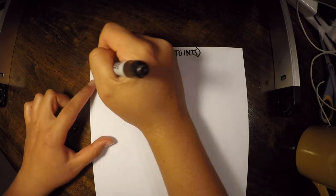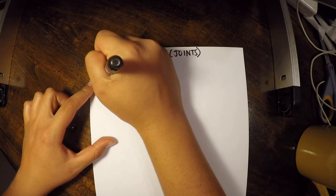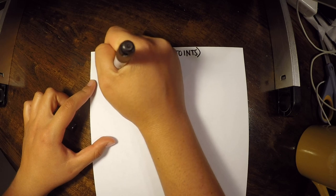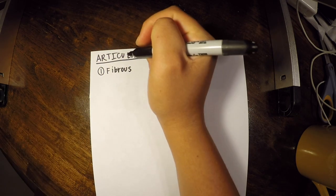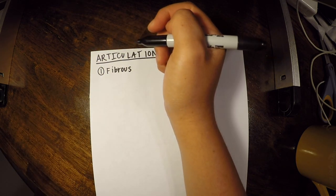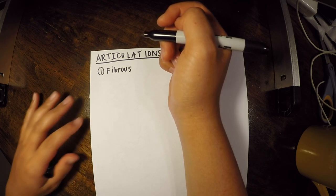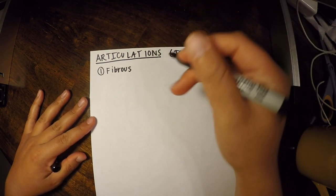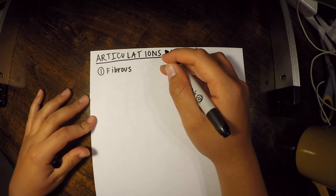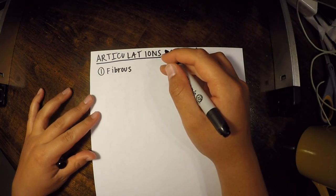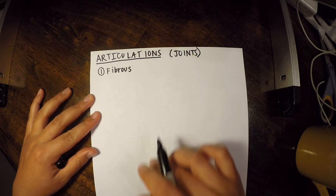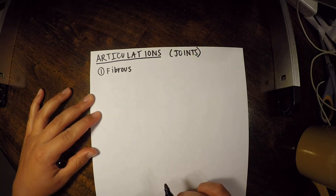The first category of joint is fibrous. In general, fibrous joints are less mobile than the other ones — going from less motion to more motion as we move through the categories.